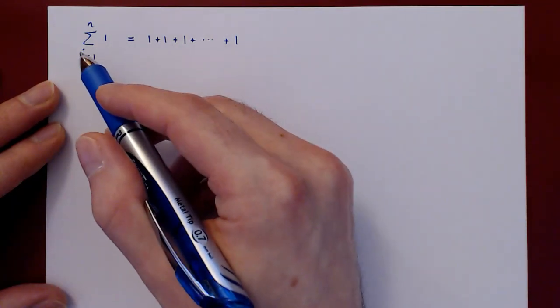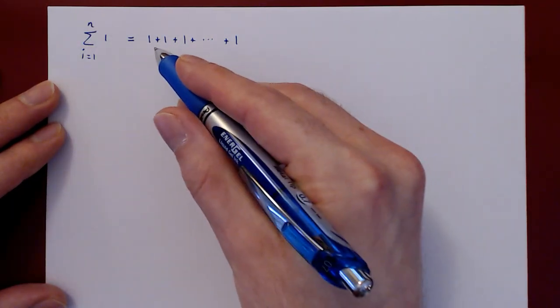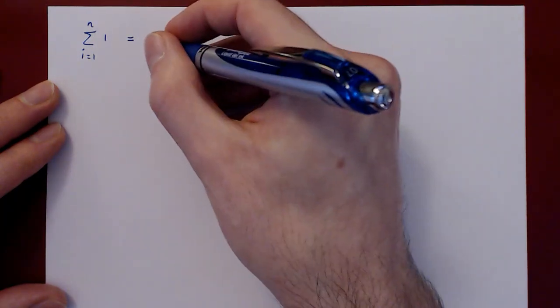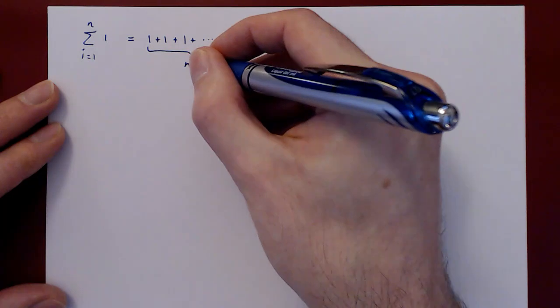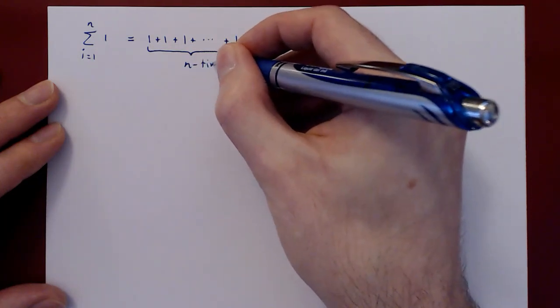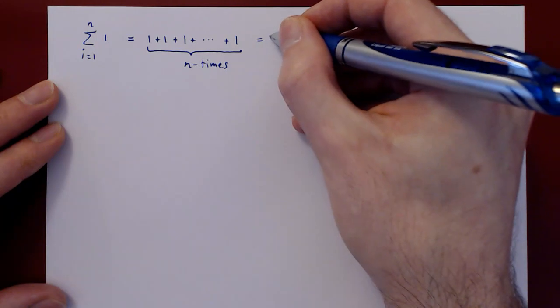And since i ranges from 1 to n, then there are here exactly n terms. So we are summing 1 n times. So the result is obviously n.